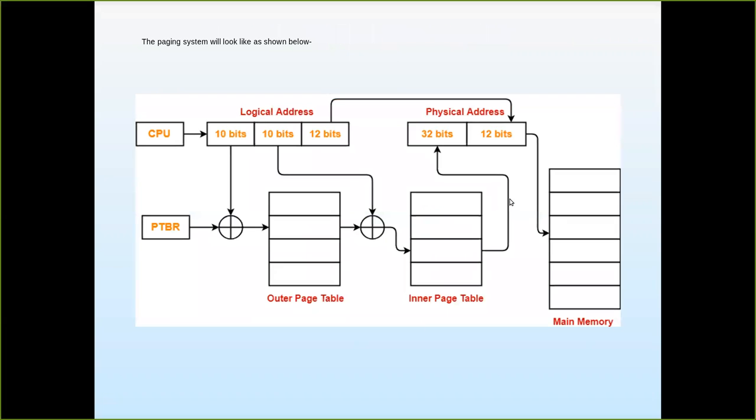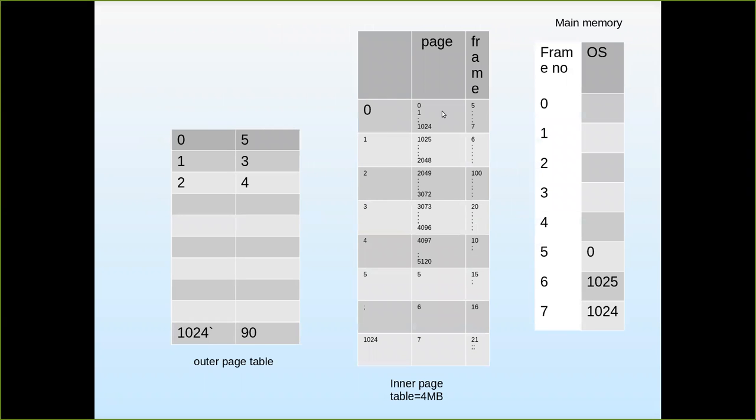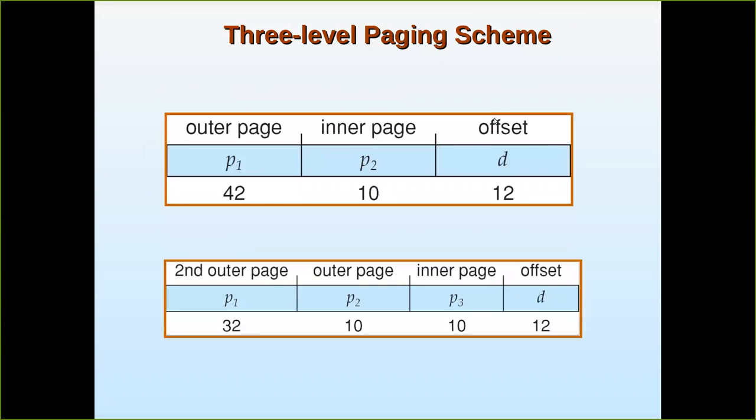Instead of keeping the page table conventionally, we are going to keep it as a chain. If zero page is accessed, then this will be accessed. So now we will see how it is done.